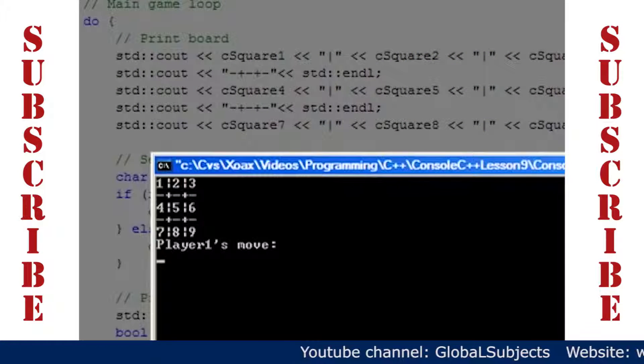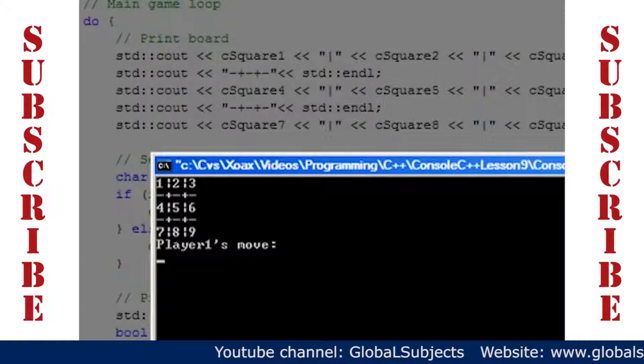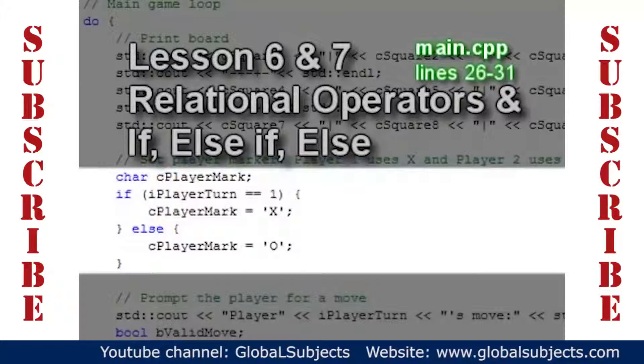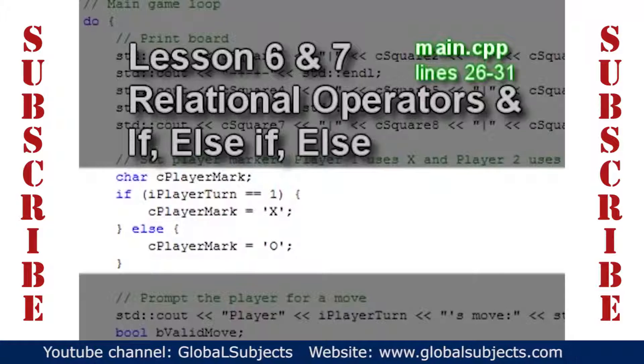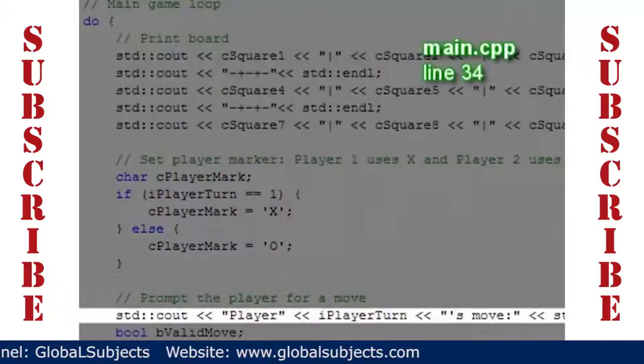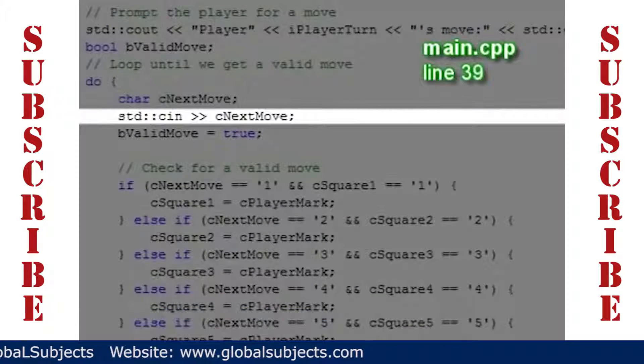Notice that the console window prompts the player for a move. The player's moves are handled by the next portion of code. Here we set the player's mark to X if it is player 1's turn, or to O if it is player 2's turn. Then we prompt the player for a move. The CN statement waits for the player's input.